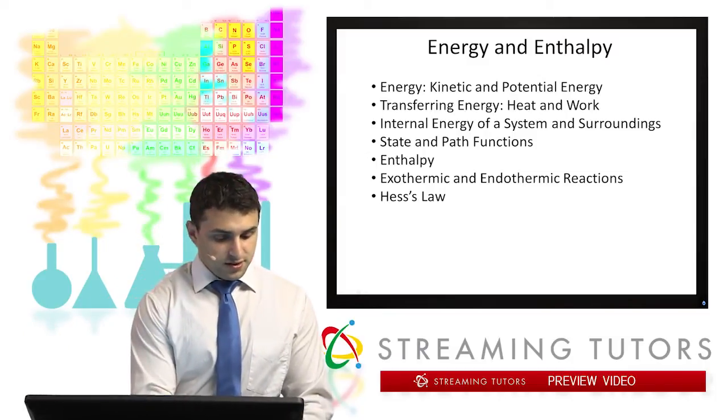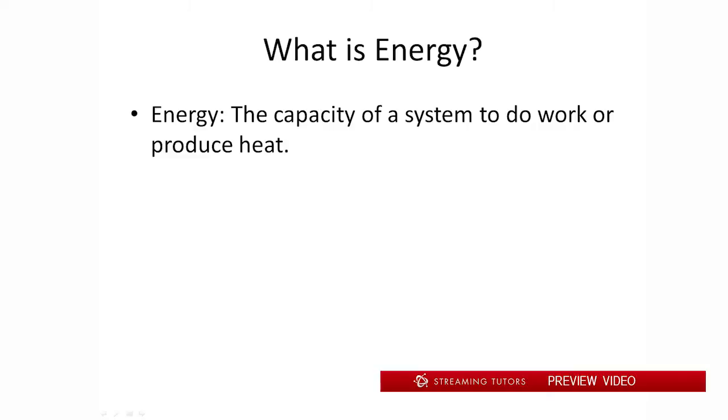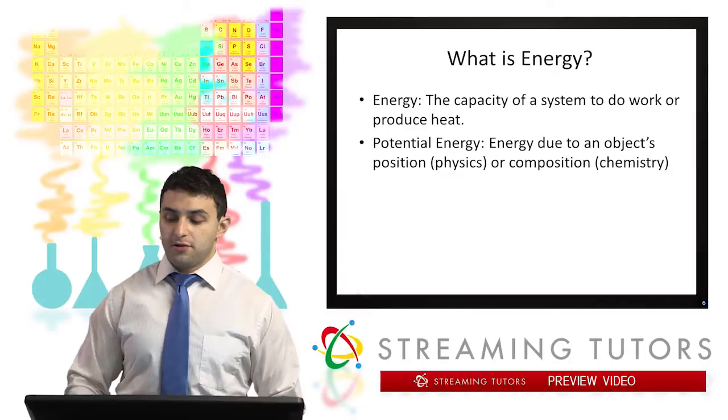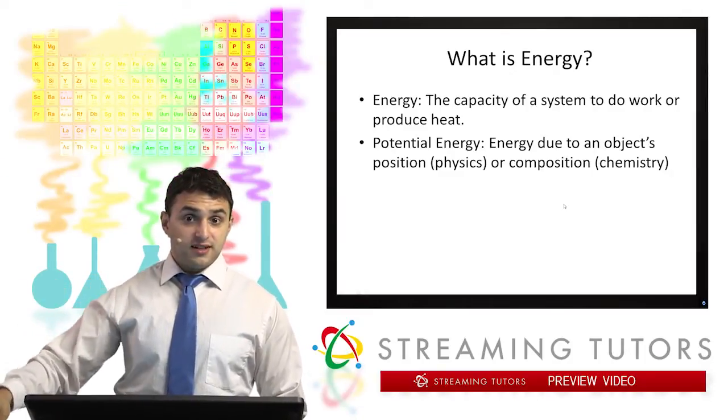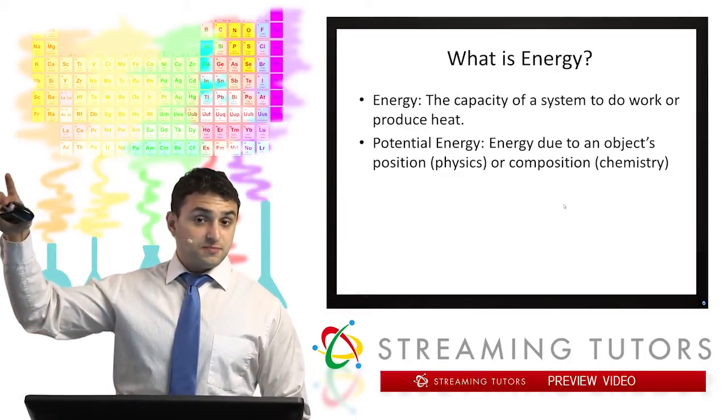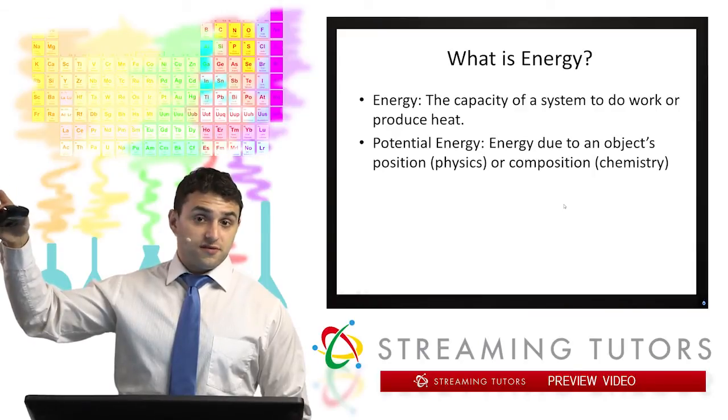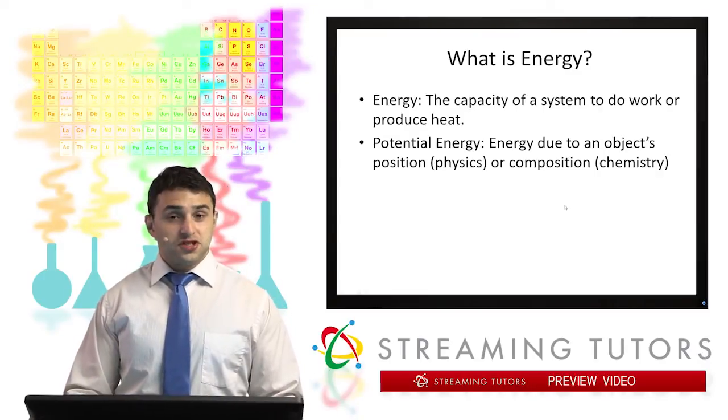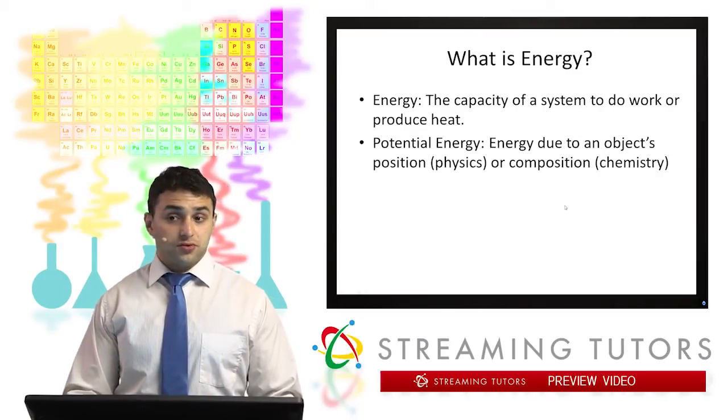So the first thing we're going to look at is defining energy. Energy is simply the capacity of a system to do heat or work which are the two ways that one can transfer energy between systems. There's two main types. There's potential energy which is due to an object's position or its composition. So for example if I hold up this mouse here and I drop it, when I'm holding it up here and drop it, it has potential energy and that's what causes it to fall because of the force of gravity. Or composition just meaning any of the energy stored in a chemical bond.